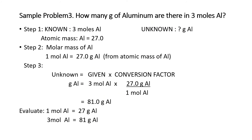Sample problem 3: How many grams of aluminum are there in 3 moles of aluminum? The known is 3 moles of aluminum and the unknown is grams of aluminum. The atomic mass of aluminum is 27. Step 2: calculate the molar mass — the mass of 1 mole of aluminum is equal to 27 grams, from the atomic mass of aluminum.